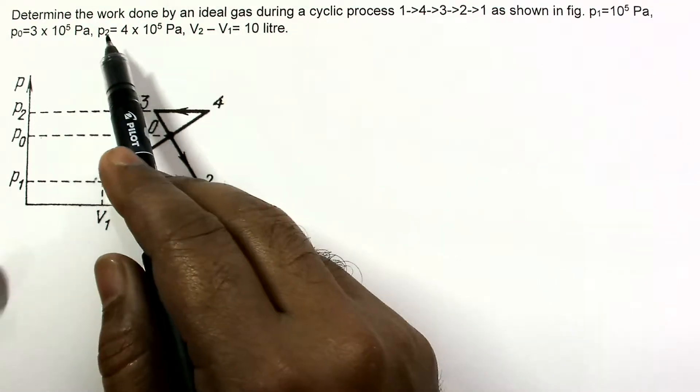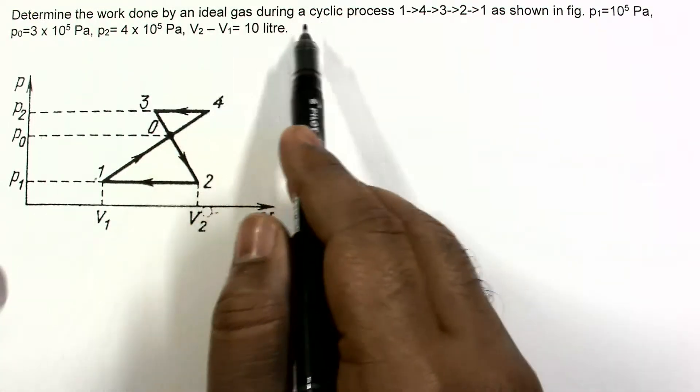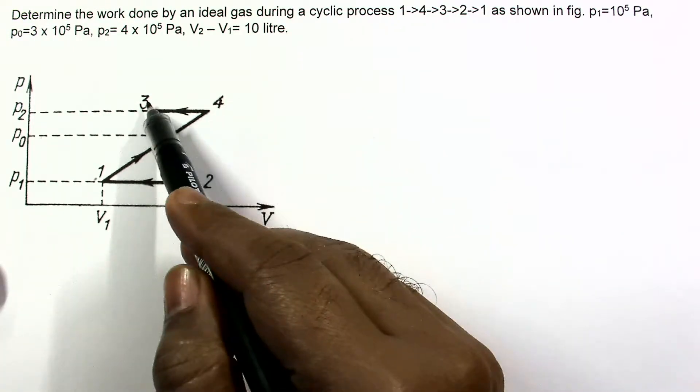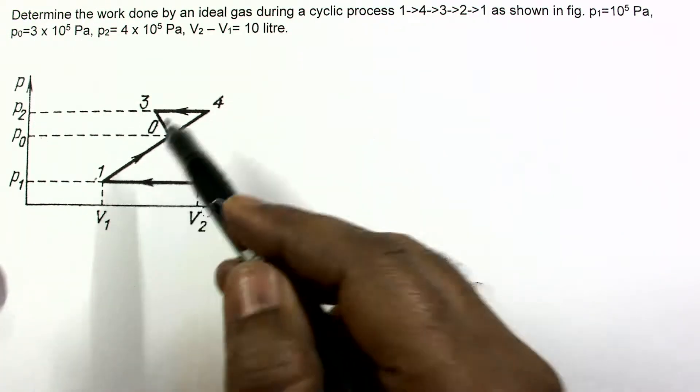In this problem, determine the work done by an ideal gas during a cyclic process 1 to 4 to 3 to 2 and 2 to 1 as shown in the figure.